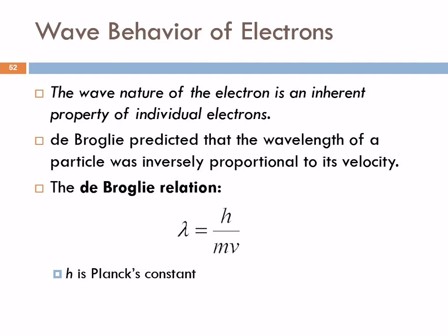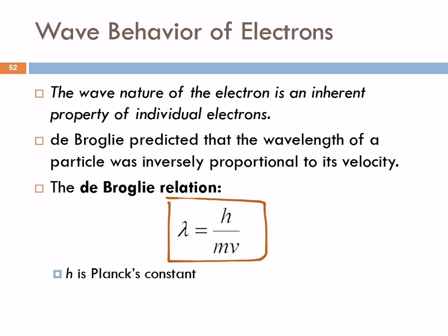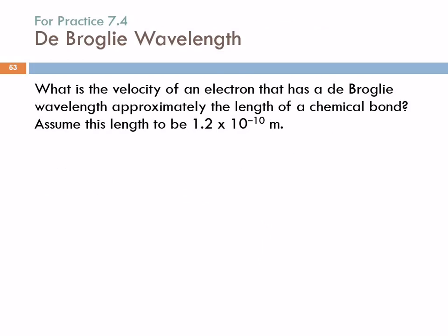If something is a wave, it must have a wavelength. De Broglie predicted that the wavelength of a particle is inversely proportional to its velocity. This is the de Broglie relation: the wavelength of a particle is equal to Planck's constant divided by the mass times the velocity — λ = h / (mv).